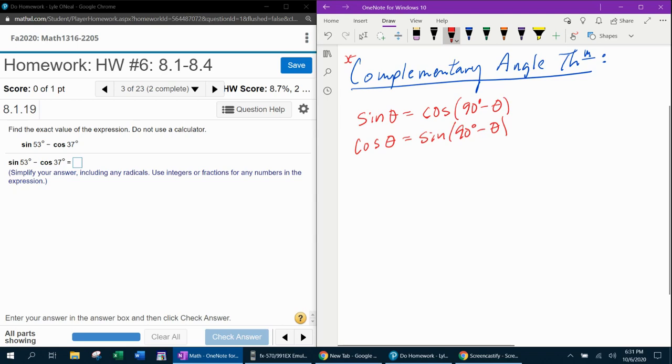So now with this information, we're going to show how to work this problem. Sine of 53 degrees minus cosine of 37 degrees. And we know that sine of theta is the same as cosine of 90 minus theta. So what I'm going to do is replace sine of 53 with a cosine of 90 minus 53.